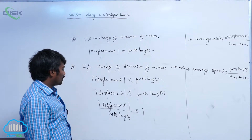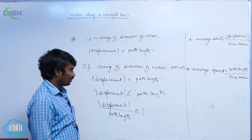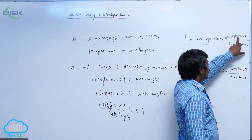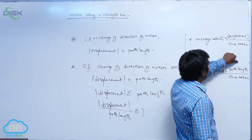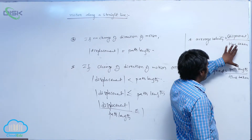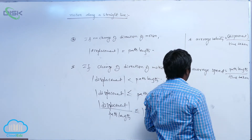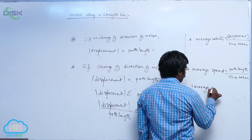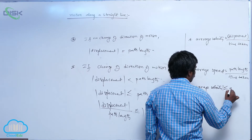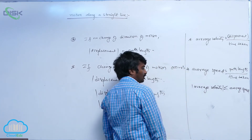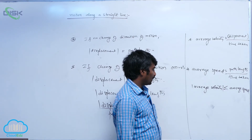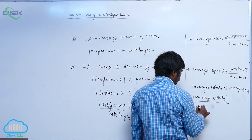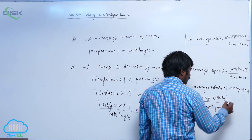As discussed, displacement magnitude is less than or equal to path length magnitude. That means if the time taken is the same — considering the same motion and calculating displacement and path length for that motion — then displacement magnitude is always less than or equal to path length magnitude. Therefore, average velocity magnitude is also always less than or equal to average speed. There is no case where average velocity magnitude is greater than average speed, meaning the magnitude of average velocity divided by average speed is less than or equal to 1.